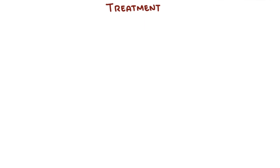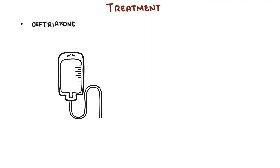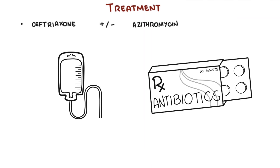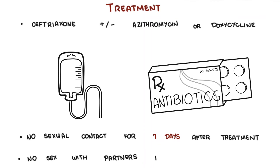Treatment of gonorrhea is with ceftriaxone and with the addition, possibly, of azithromycin or doxycycline. It's important to have no sexual contact for seven days after treatment is administered. There should be no sex with partners from the last two months until the partners have been tested and treated if necessary.